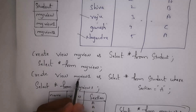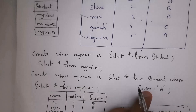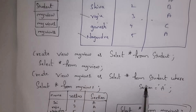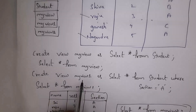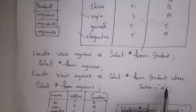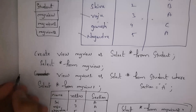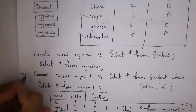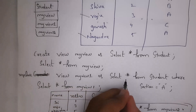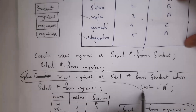Now I will explain how to update views. For example, 'my_view_1' contains complete data of students whose section is A. Now I want to update 'my_view_1' — this time I want it to contain data of students whose section is B. Using the REPLACE command we can update a view. Write: CREATE OR REPLACE VIEW my_view_1 AS SELECT * FROM student WHERE section = 'B'.